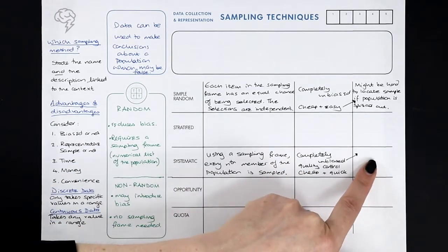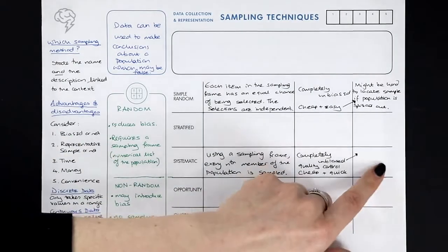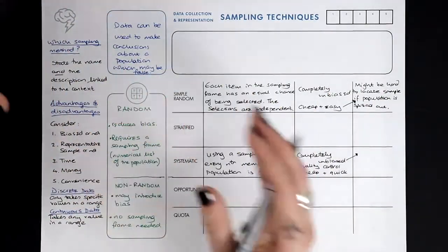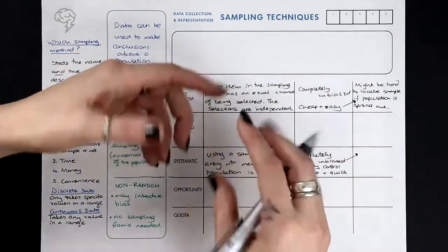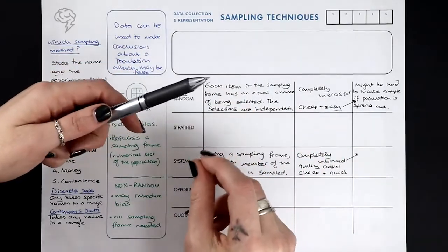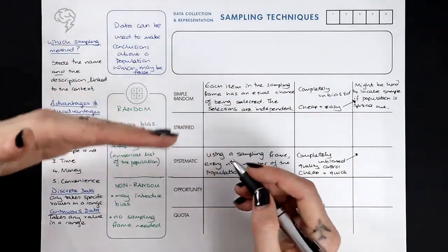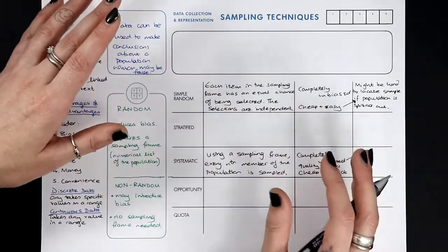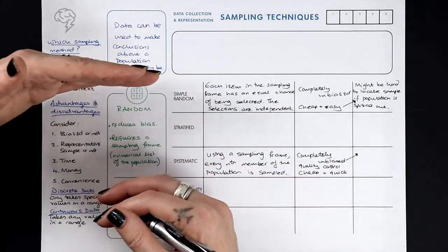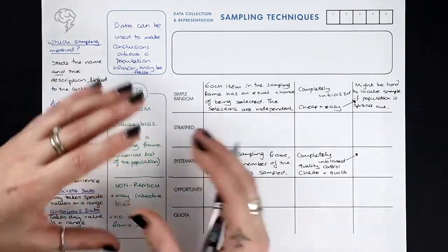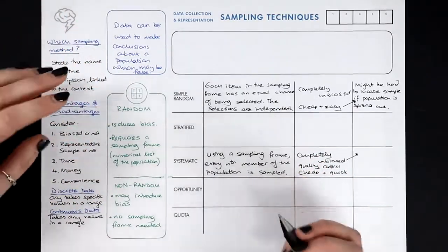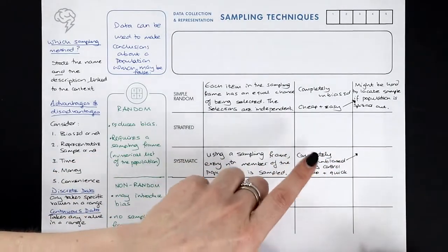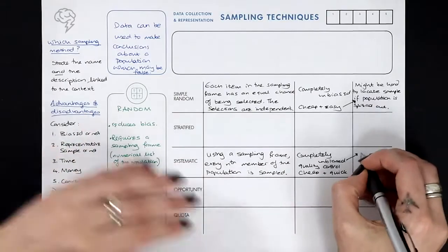The big issue with systematic sampling is: what if there's a pattern in the data? If the assembly line has a machine that makes an error on every fifth item, and we sample every fifth item, we might either think they're all flawed or none are flawed. So systematic sampling is unbiased only provided there is no pattern in the population.